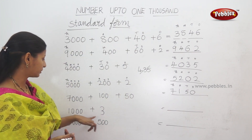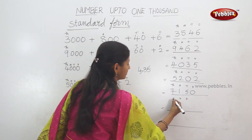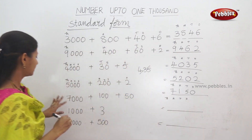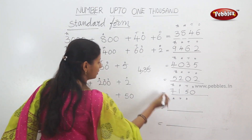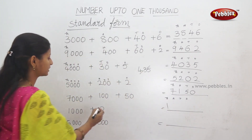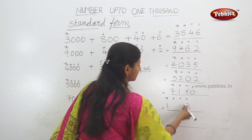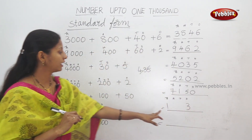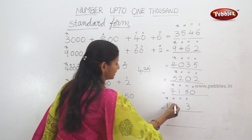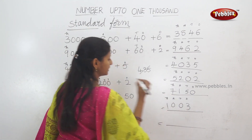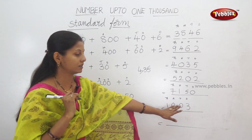One more example: 1000 plus 3. Ones, tens, hundreds, thousands. So, how many thousands? One thousand. So, thousands position is 1. Next, single digit number — ones place is 3. Three is 3.